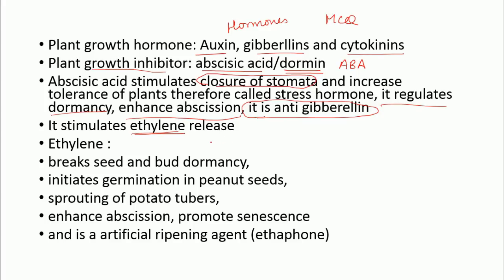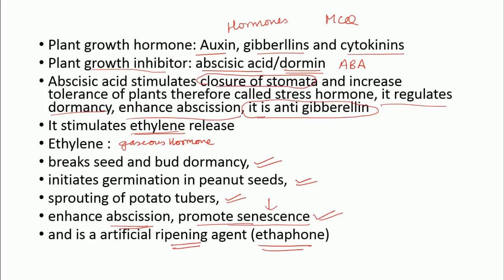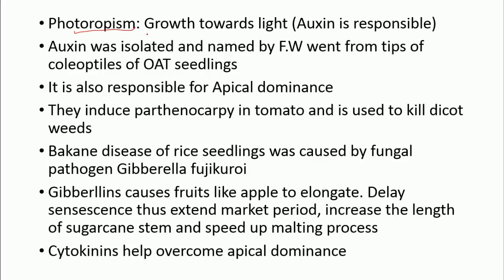Ethylene is a gaseous hormone. It helps to break dormancy and initiate germination in peanut seeds. It also helps in sprouting of potato tubers, enhances abscission, and promotes senescence. Which hormone promotes senescence? Ethylene. Ethylene is also an artificial ripening agent. The main artificial ripening agent is Ethephon. Phototropism is a growth towards light, and the hormone responsible for phototropism is auxin.